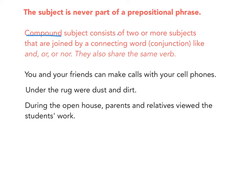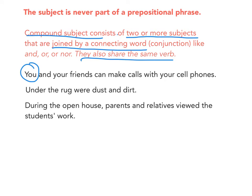Compound subjects are two or more subjects joined by a connecting word that share the same verb. For example: 'You and your friends can make calls with your cell phones.' The subjects are 'you' and 'your friends,' and the verb that they share is 'can make.'